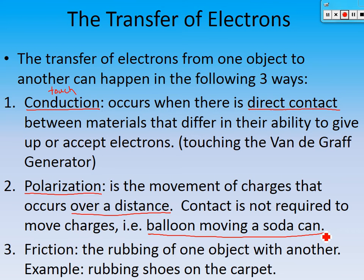The last way electrons can move from one object to another is friction — the rubbing of one object against another. For example, rubbing your shoes on the carpet. Another thing that works really well to build up static electricity is rubbing your shoes on a trampoline mat — it can build up quite a large charge. So the three ways are: conduction, polarization, and friction.